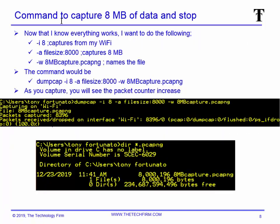On to the command to capture and stop your trace file — a very common request from the command line. In this case we want to stop after 8 megabytes of data. The option is dash-A filesize:8000 — remember 8,000 is 8,000 kilobytes, so that's 8 megabytes. Then dash-W to write to a file name; I called it '8MB_capture'. Use something self-explanatory. The packet capture counters will start incrementing; when it hits 8 megs it stops automatically. Press Ctrl-C if you want to stop early. Do a DIR and you'll see '8MB_capture.pcapng' at 8 megabytes.